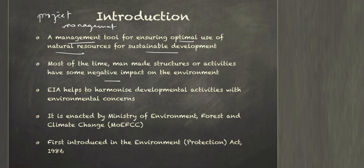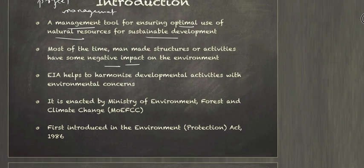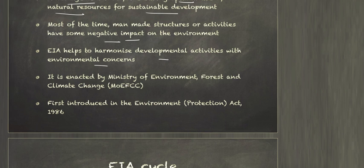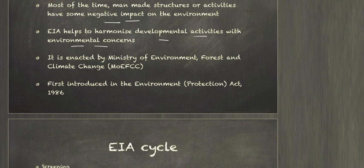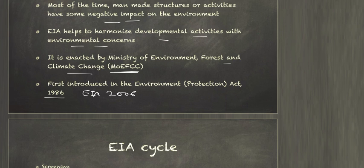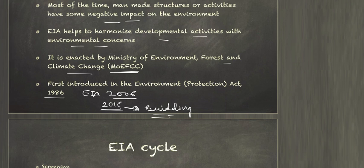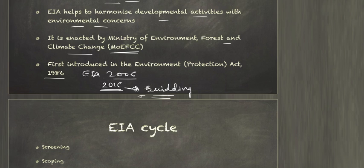Whenever we do some construction, it creates some negative impact. EIA helps to control those negative impacts — it helps to harmonize developmental activities and environmental concerns. It is enacted by the Ministry of Environment, Forest and Climate Change. It was first introduced in 1986, then there was another notification in 2006, and in 2016 one more amendment came to the 2006 notification, particularly about the building sector.